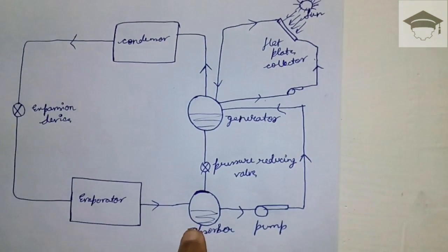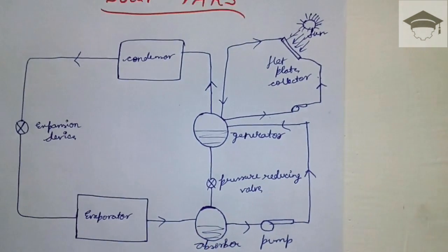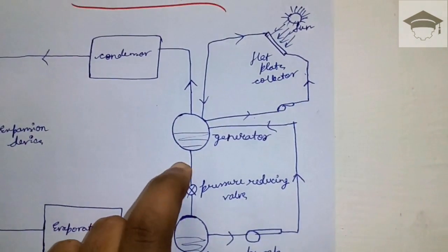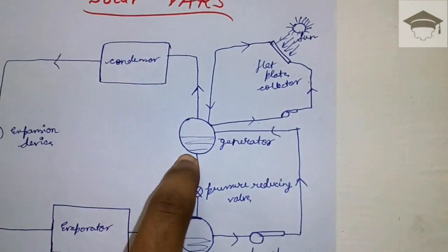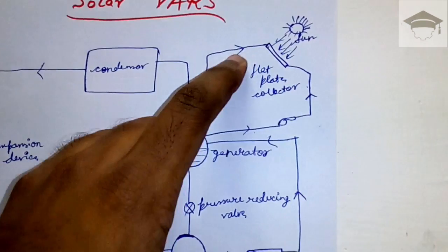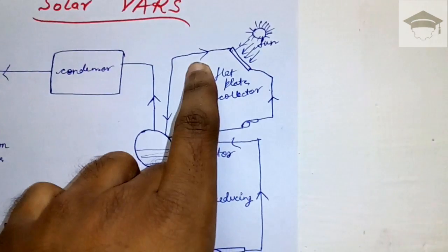In the generator, heat is taken from water that is circulated in this circuit. The water is circulated through the flat plate collector. The water is heated up using the energy of the sun.